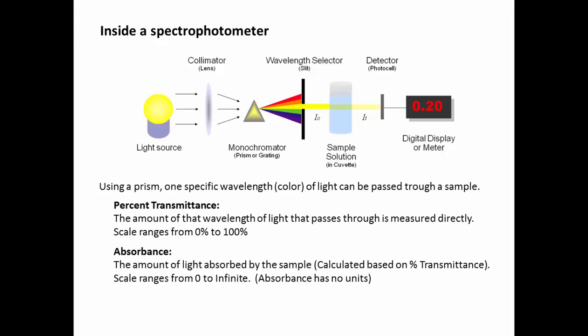Absorbance is the amount of light absorbed by the sample, and this is calculated based on the amount of light that is passed through or transmitted. This scale ranges from 0 to infinity. And as a note, absorbance doesn't have any units.